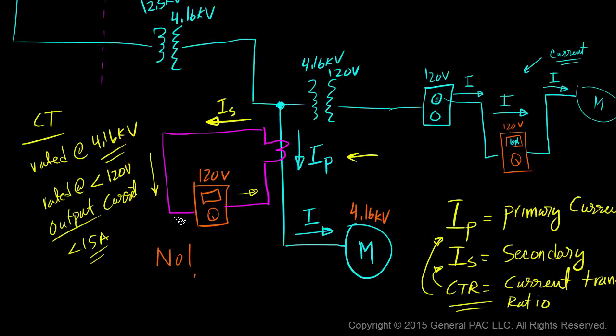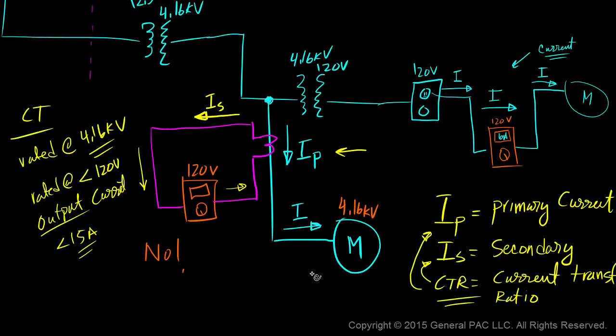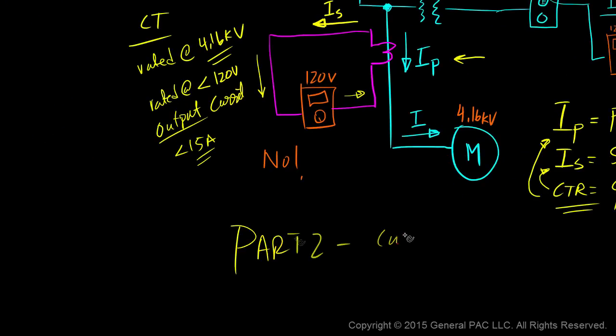So this is just a very simplified example of a situation where we would use a current transformer and the basic terminologies that is involved in a current transformer. In part two, we'll look at current transformer polarity marks. And we'll also look at the CTR and relate primary current to secondary current. Thank you.